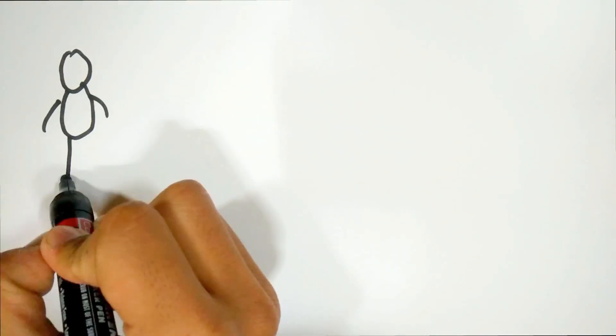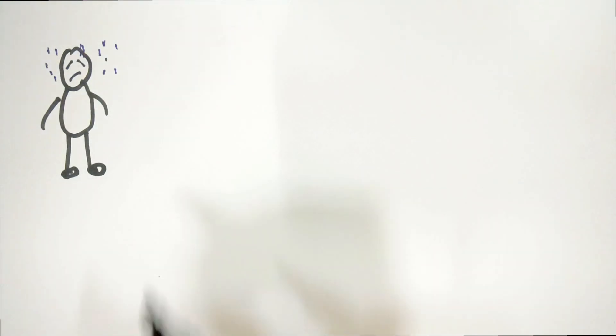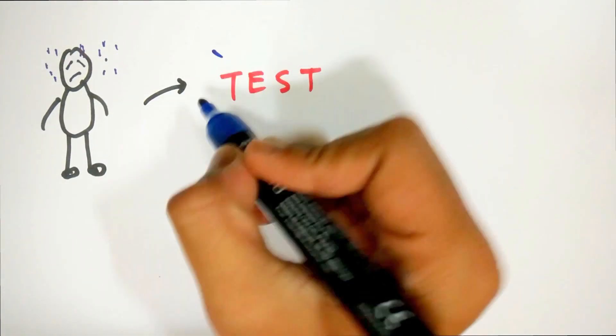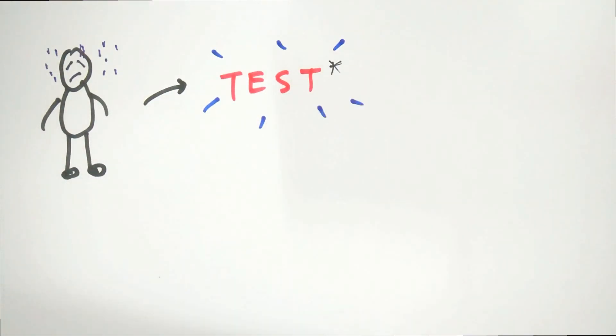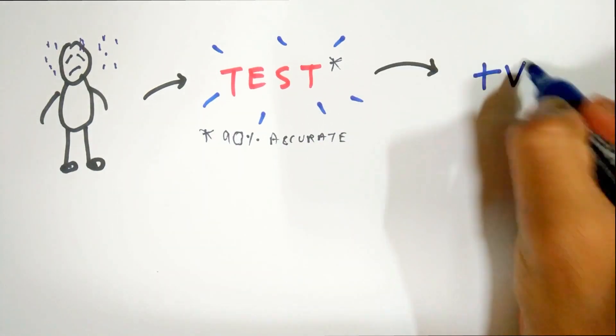Assume you find out that you are having symptoms for a disease that happens to only 5 in 1000 people. So you decide to take a medical test for that disease and your doctor tells you that this test is proven to give 90% accurate results. Accurate enough. The test results come out and you tested positive for that disease.